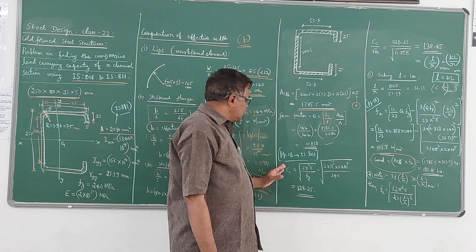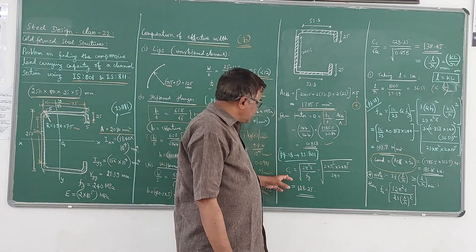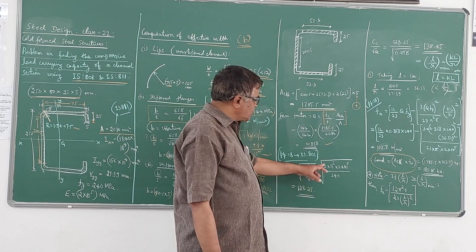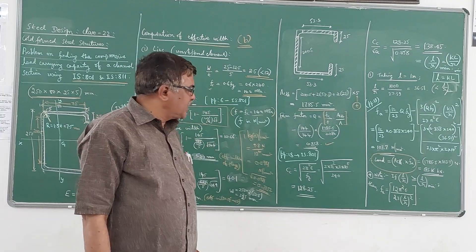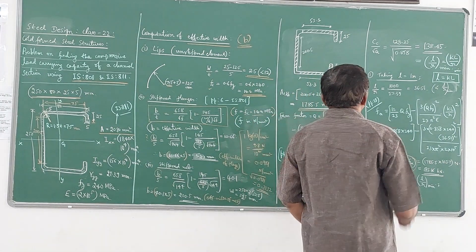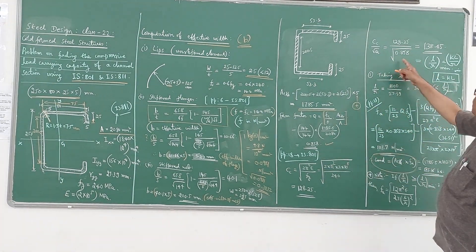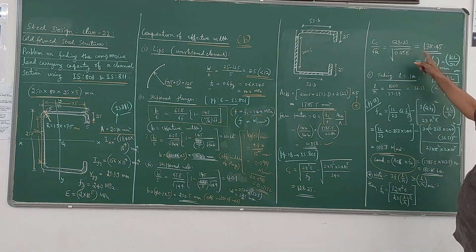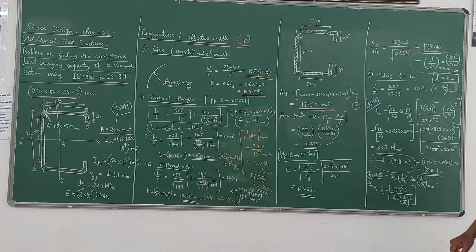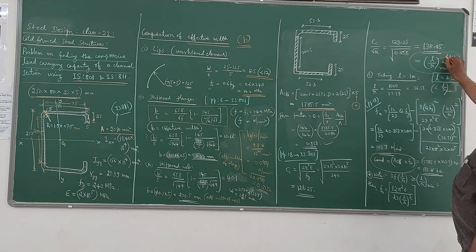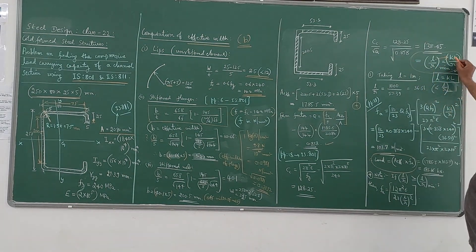Going to clause 18 of IS801, we have the formula for parameter Cc = √(2π²E/Fy). Substituting E = 2×10⁵ and Fy = 240, we get Cc = 128.25. Then Cc/√Q = 128.25/√0.858 = 138.45. As per the code, this value corresponds to the limiting L/R ratio, i.e., Cc/√Q is the same as KL/R_minimum.